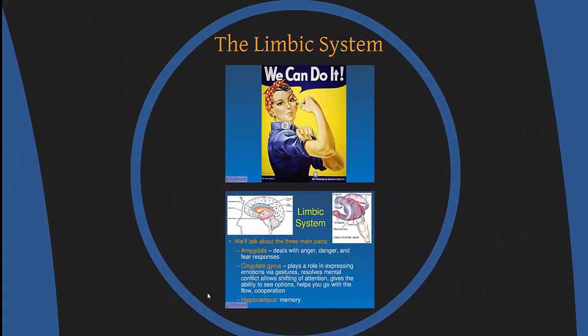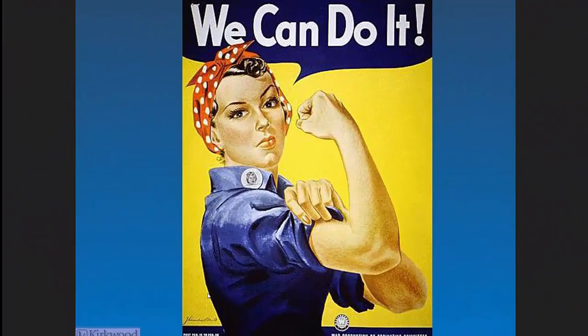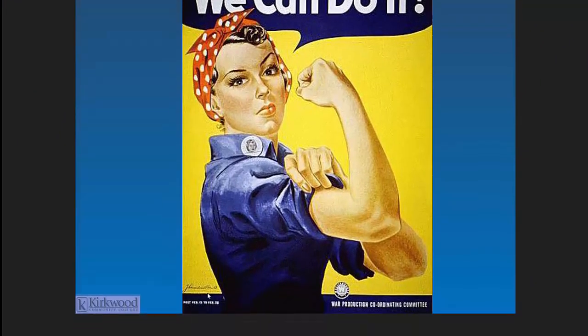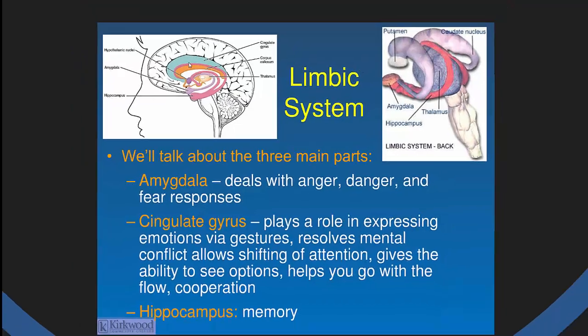Still in the forebrain: the limbic system. It's composed of three major structures — the amygdala, the cingulate gyrus, and the hippocampus — located deep in the middle of the hemispheres.